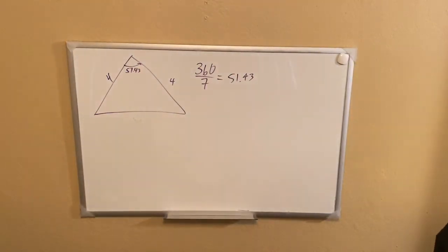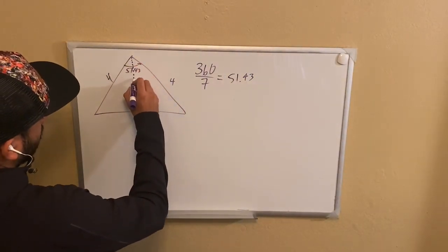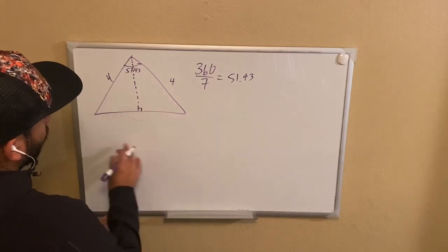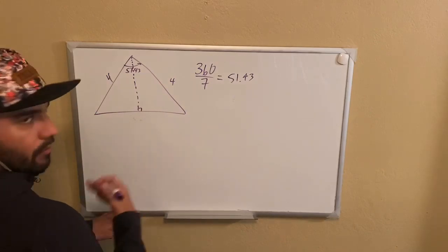Now, how do we separate this? We're going to draw a straight line here that is perpendicular to the base. Now, what that's going to do is it's going to cut this triangle in half, which is fine.